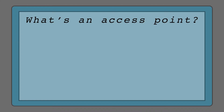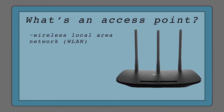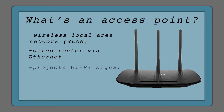What is an access point? An access point is a device that creates a wireless local area network, or WLAN, usually in an office or large building. An access point connects to a wired router, switch, or hub via an ethernet cable and projects a Wi-Fi signal to a designated area.